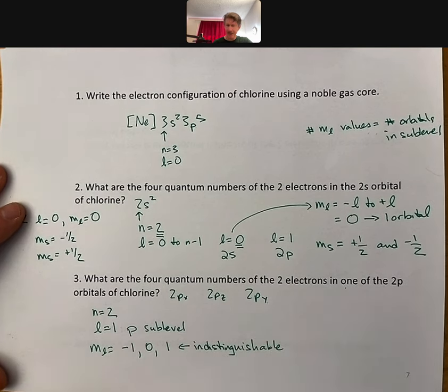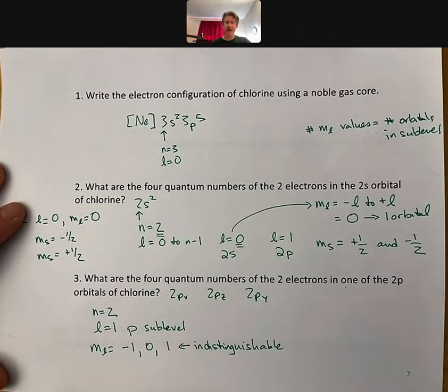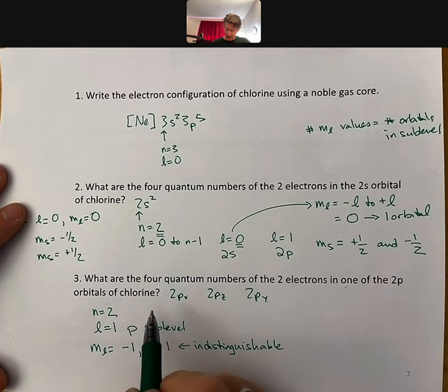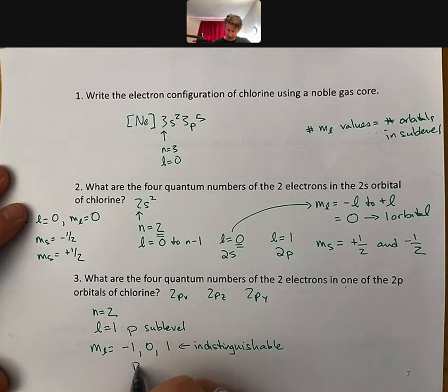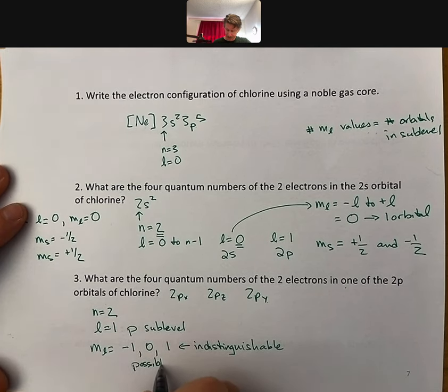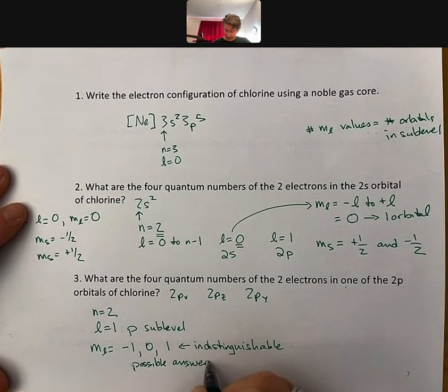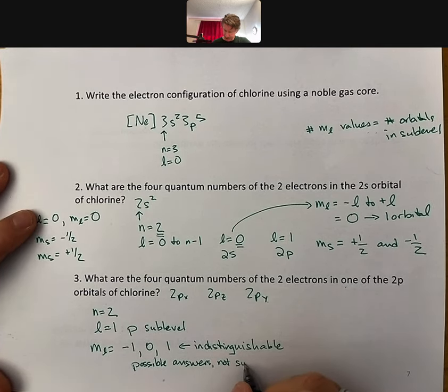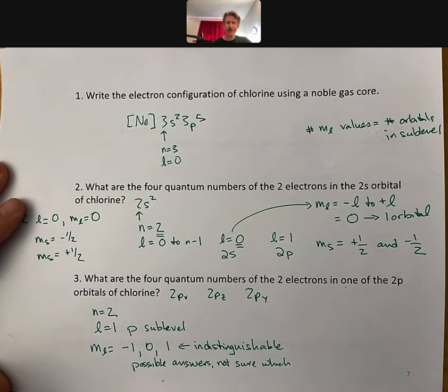They're indistinguishable, meaning that we cannot tell one from the other. So, we cannot tell which one we've got. In one of the 2p orbitals of chlorine, I would say all of these are possible answers. We're not sure which one is the correct answer. Which is a strange answer, I know, but that's where we are.